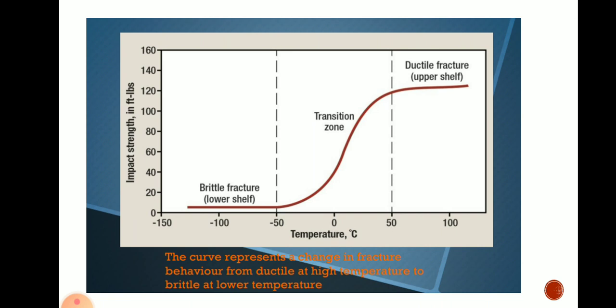In some cases, for example, a ductile material is used in making a ship, and the ship is floating over water at a very low temperature — suppose minus 100 degrees. At that low temperature, the ductile material will behave like a brittle material. Whenever an impact load occurs — suppose an iceberg hits the ship body — the ship can behave like a brittle material and break immediately.